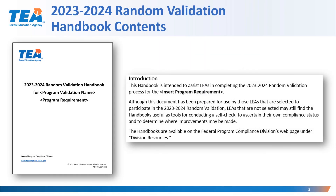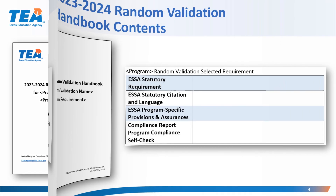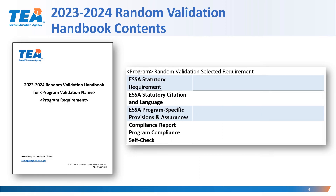The first section of the handbook is an introduction that provides general information related to the random validation process. The next section of the handbook includes a table that describes information related to the particular random validation requirement that was selected.